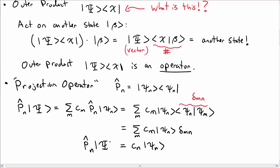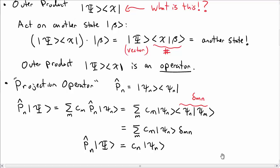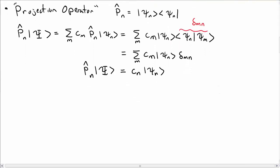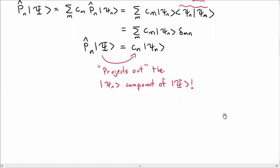So I had a projection operator acting on psi, and it gave me back just cn psi n. So it just gave me out the psi n component of psi. So this, in some sense, projects out the psi n component of a general state, capital psi. That's what the projection operator is. It's useful and will show up occasionally.